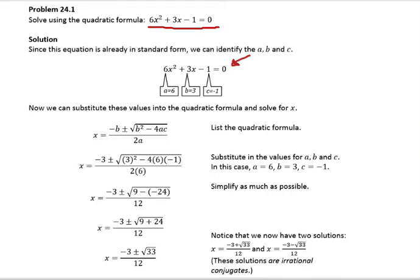That means it starts with the x squared term, continues with the x term, and then the constant term, and it is set equal to 0. Now we can just find the coefficients, name them a, b, c. The first coefficient a is 6, b is 3, and c is negative 1.